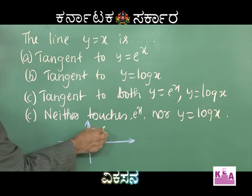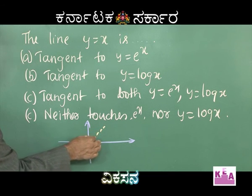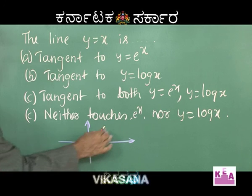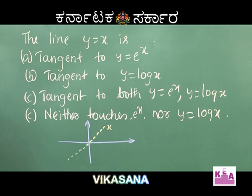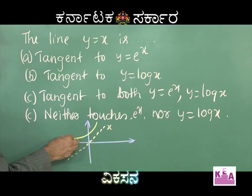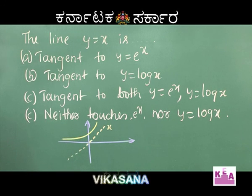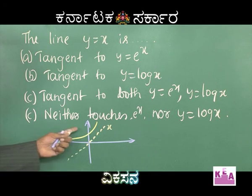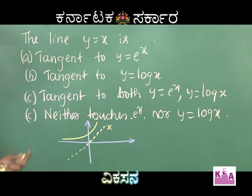This is y = x, and y = eˣ is clearly like this. It will not touch y = x at all. The equation eˣ = x does not have a solution at all. Therefore, eˣ never meets x.